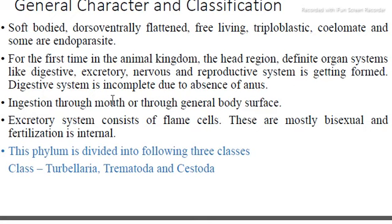The mouth is present and the anus is absent. Ingestion occurs through the mouth, and absorption occurs through the general body surface. The excretory system removes nitrogenous waste material. Flame cells are present. These animals are mostly bisexual and fertilization is internal.